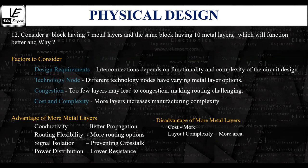Regarding routing flexibility, additional metal layers provide more routing options. Complex designs benefit from extra layers by avoiding congestion and optimizing signal paths. For signal isolation, alternating horizontal and vertical metal layers help prevent or minimize crosstalk and signal interference.